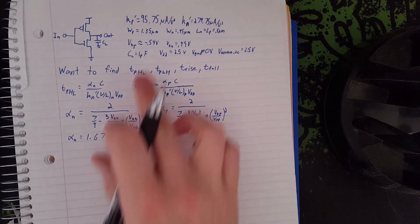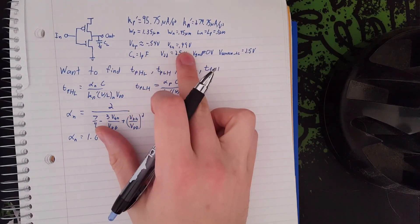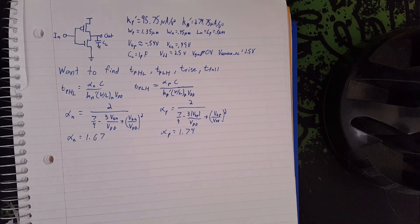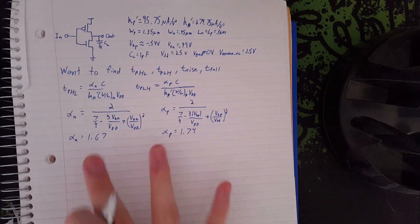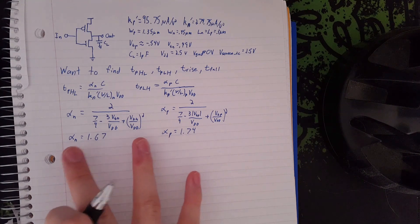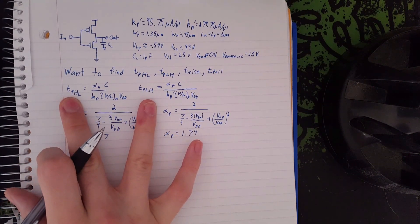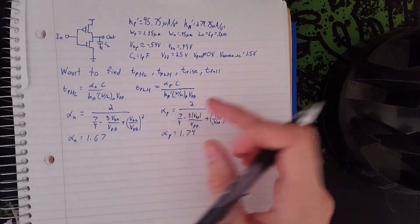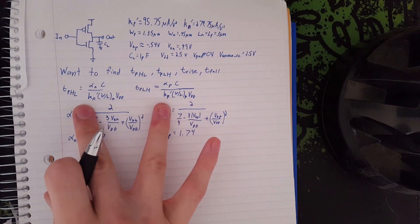These are off slightly just because our V-thresholds are slightly different. They'll normally be off slightly, but very slightly. Most of the time, you can just assume that these are going to be very close to the same. That's why we can get away with finding the delay time as just the average of these two.